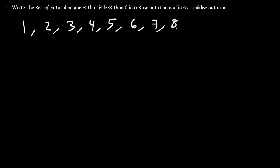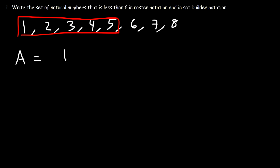Now we want to write this in a set where it's less than 6. We should only include 1 to 5, because 5 is less than 6 — we're not including 6. In roster notation, you simply need to list the elements. Set A contains the elements 1, 2, 3, 4, and 5, enclosed in braces. That's how you describe set A using roster notation.